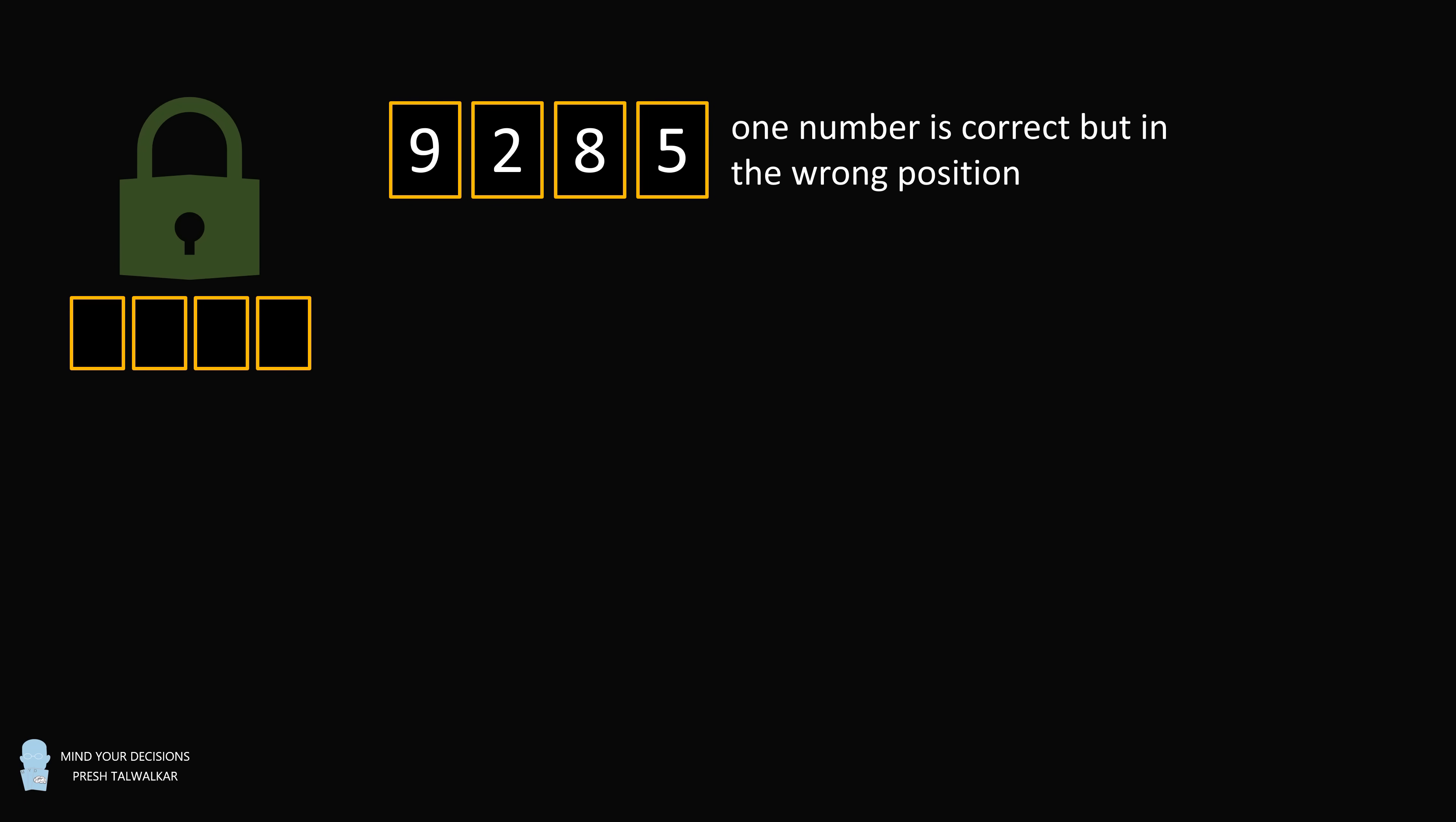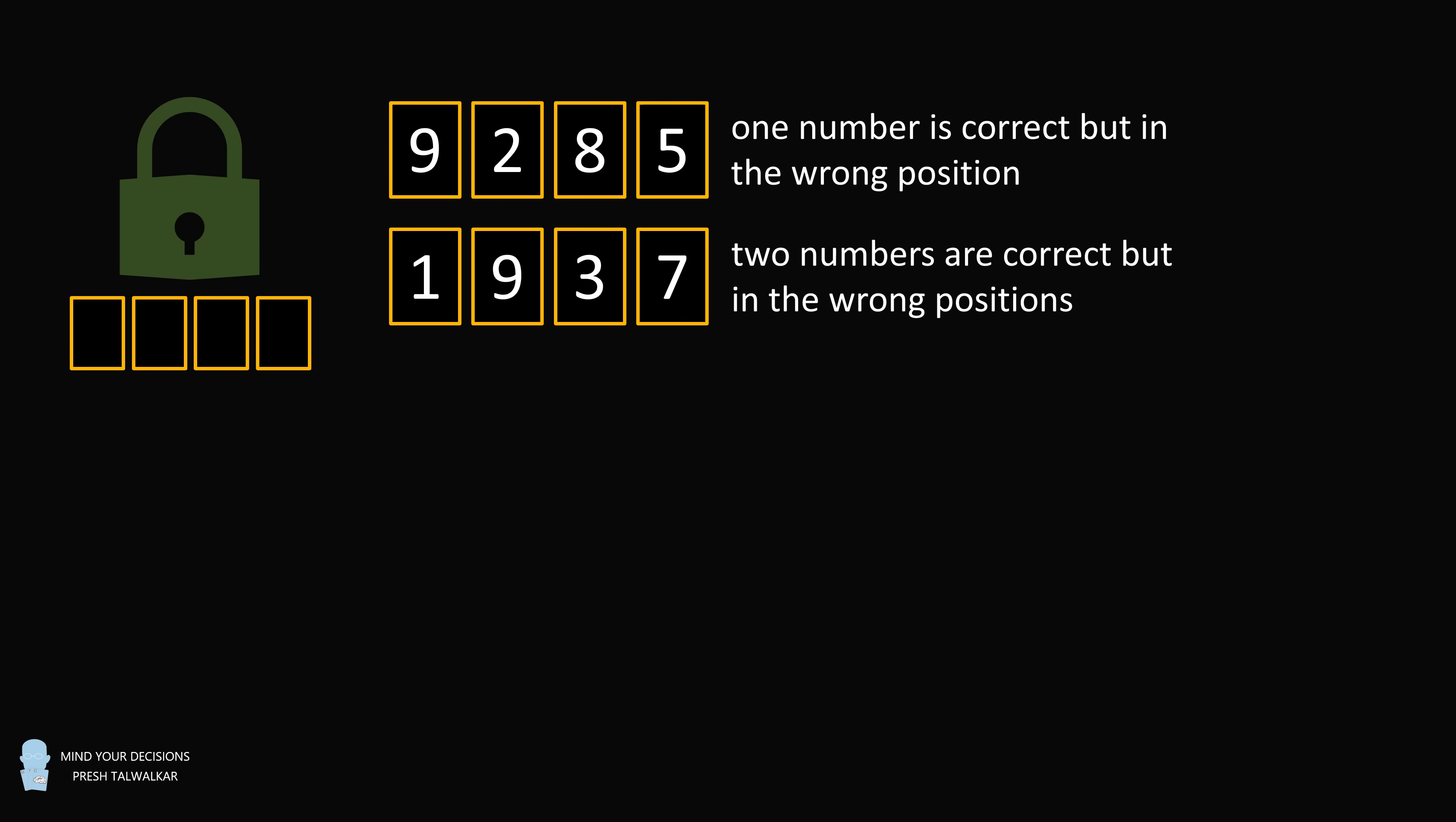9285. One number is correct, but in the wrong position. 1937. Two numbers are correct, but in the wrong positions.